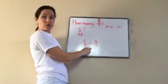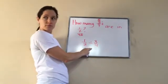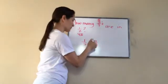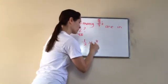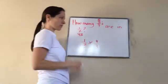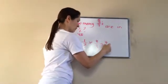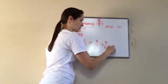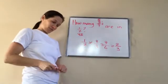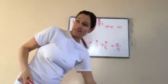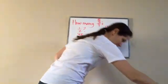So to answer this: 1 half times 4 over 3 — the 3 fourths becomes its reciprocal. Then 1 times 4 is 4, 2 times 3 is 6, and that becomes 2 thirds. Got it? Isn't that cool? That is lesson 54.